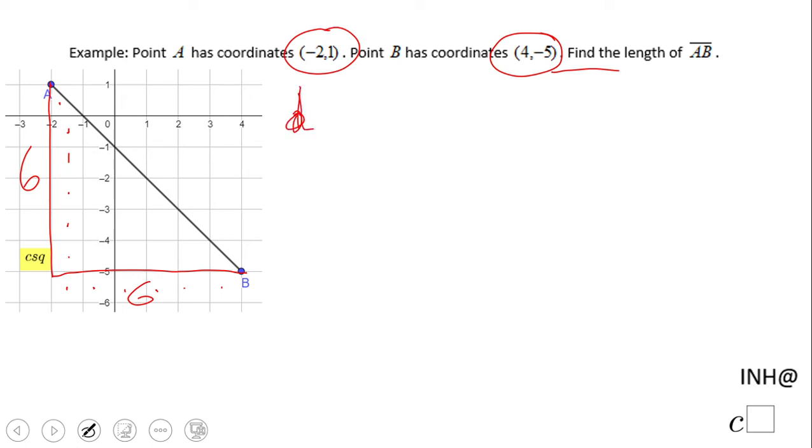I'm going to use the distance formula here, and you can double-check using the Pythagorean theorem. The distance formula looks like this: d equals the square root of (x₂ minus x₁) squared plus (y₂ minus y₁) squared.